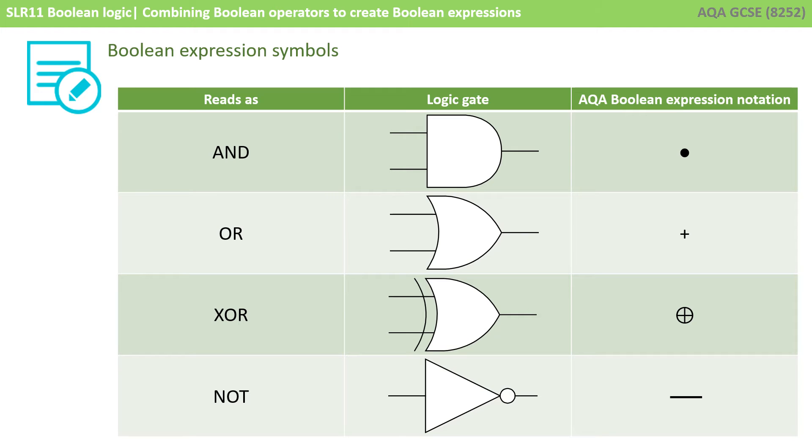So in a text format the AND gate can be represented by a dot. The OR gate by a plus symbol. XOR is a plus symbol with a circle around it. And NOT is an over bar which goes above the section which it is knotting.